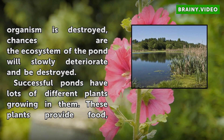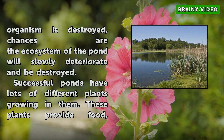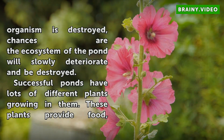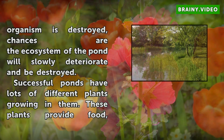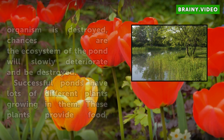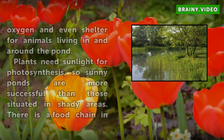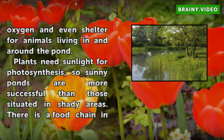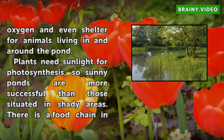Successful ponds have lots of different plants growing in them. These plants provide food, oxygen and even shelter for animals living in and around the pond. Plants need sunlight for photosynthesis, so sunny ponds are more successful than those situated in shady areas.